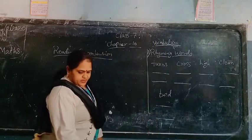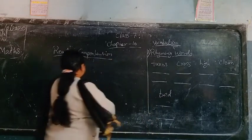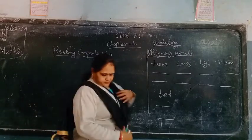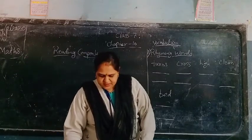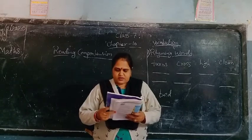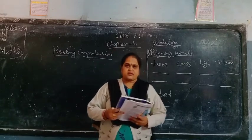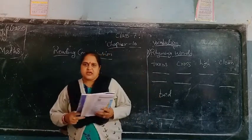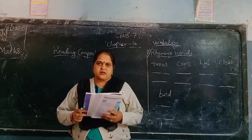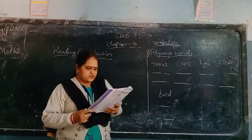Today there is a reading comprehension exercise. Put a tick against the right answer and a cross against the wrong one. Apne aap sahi ya galat ka nishaan lagana hai — sahi ka nishaan, galat hai to galat ka nishaan. Let's begin.